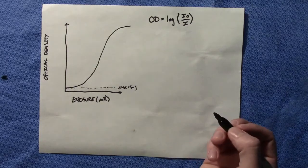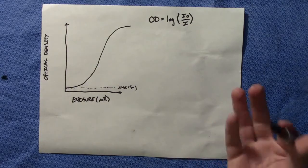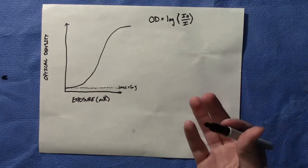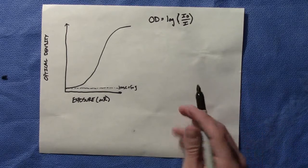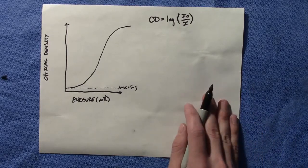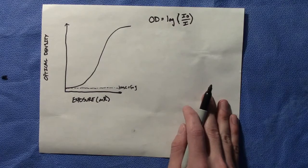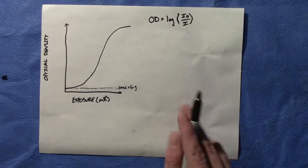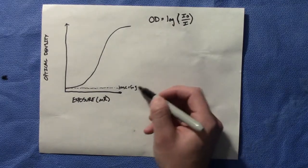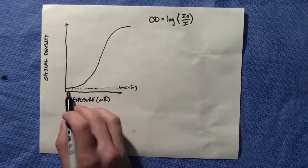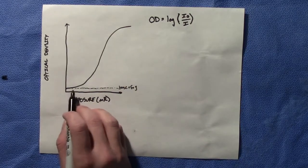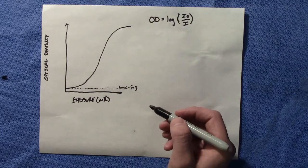Another thing: what's the speed of the film? The speed is simply the amount of radiation required to get an optical density of one above this base and fog. It doesn't include base and fog because we immediately have some type of inherent optical density.